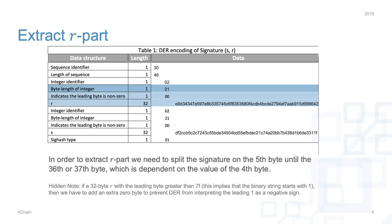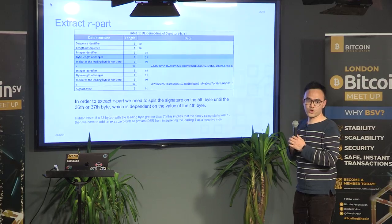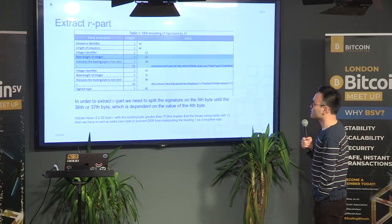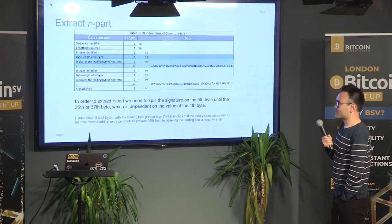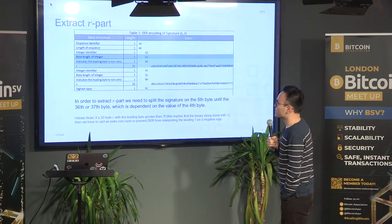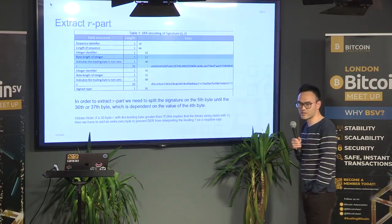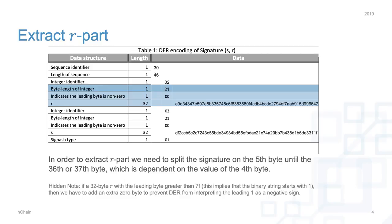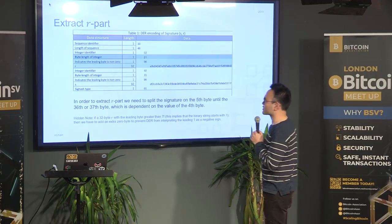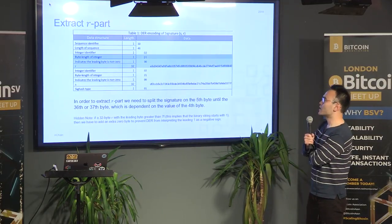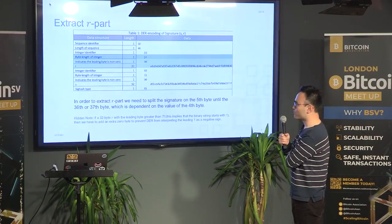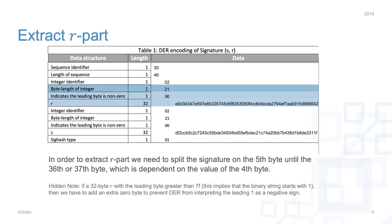Now let's look at the long string of numbers in a Bitcoin signature. In Bitcoin we use DER coding — Distinguished Encoding Rules. The first byte, the Sequence Identifier, signifies a signature is coming. The next byte specifies the length of the sequence — in this case, 46 bytes. Then another byte, the integer identifier, signifies the next integer, which in this case is 21.